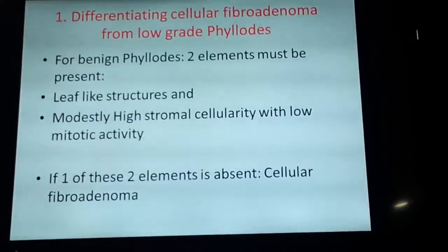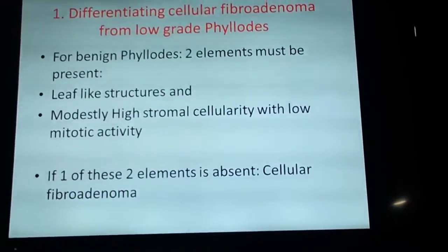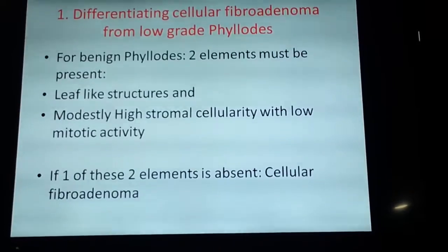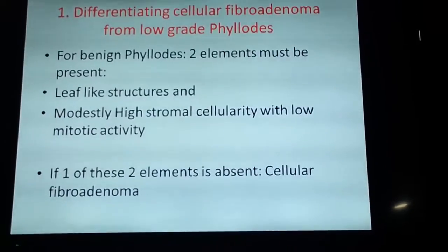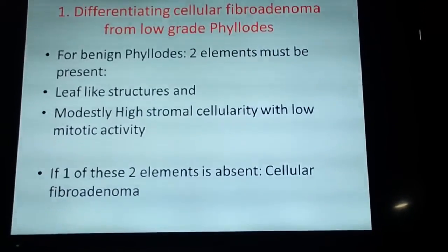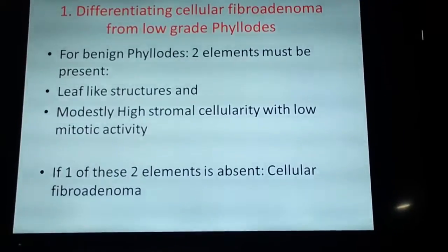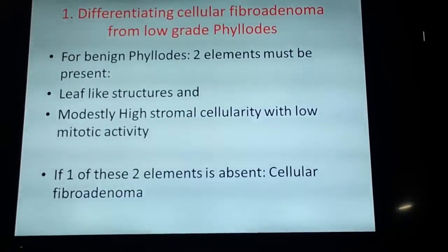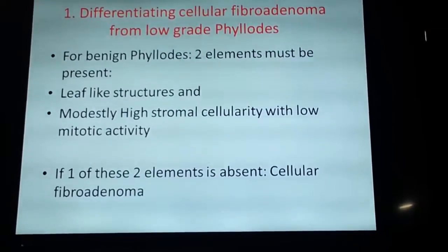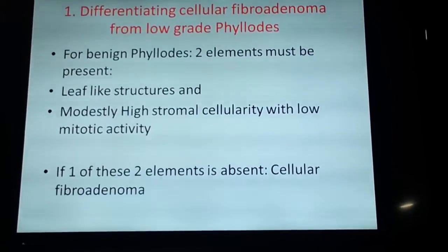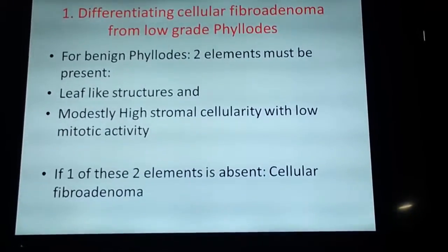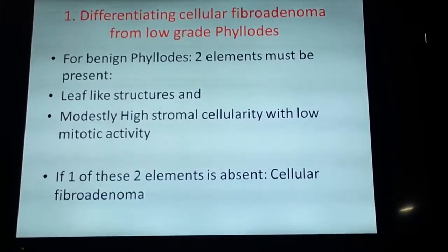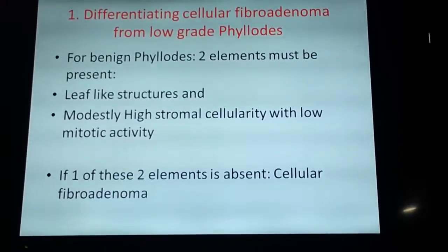How to differentiate — because this is a caring question — how to differentiate cellular fibromyalinoma from a low-grade filoides tumor. To diagnose filoides tumor, we need two things: the leaf-like structures and the high cellulite. If one of these elements is absent, it's a cellular fibromyalinoma.